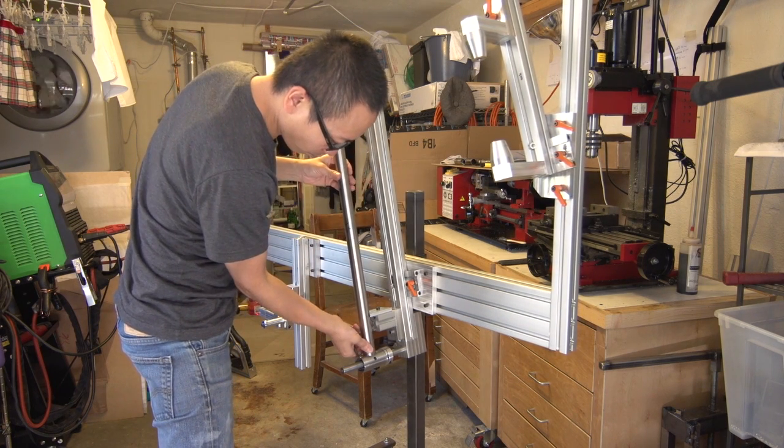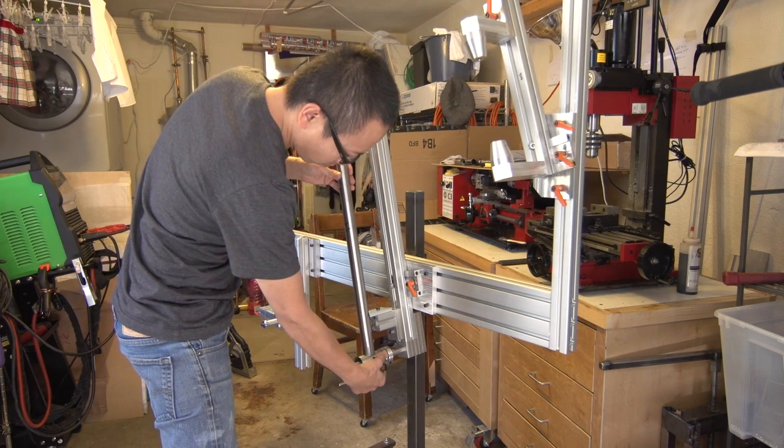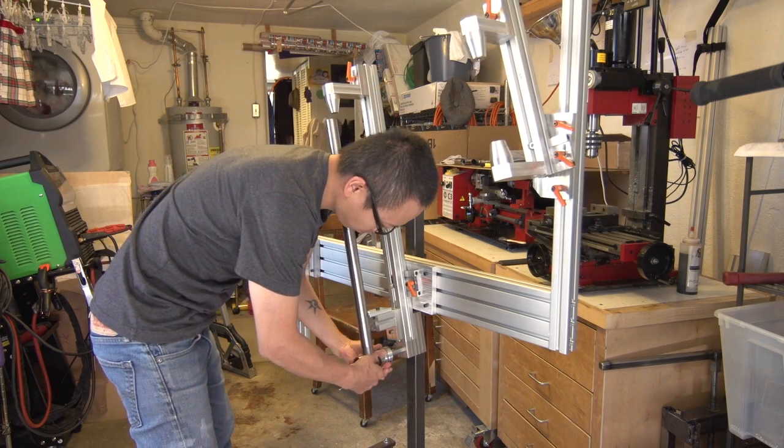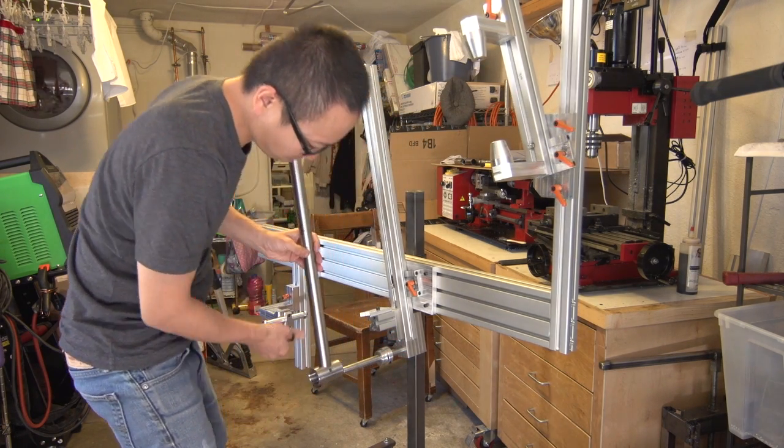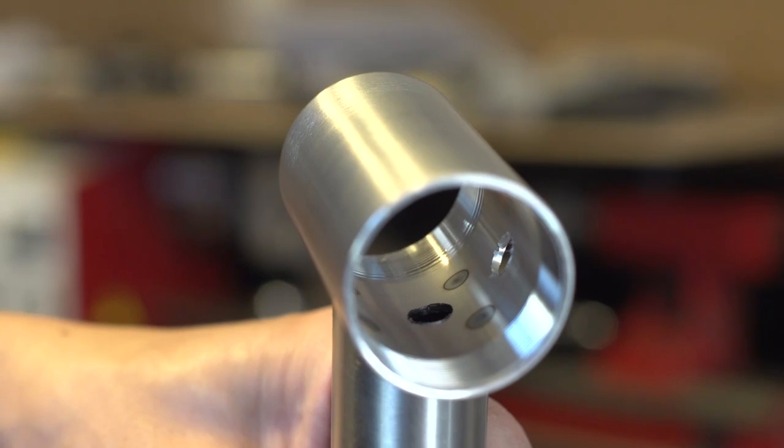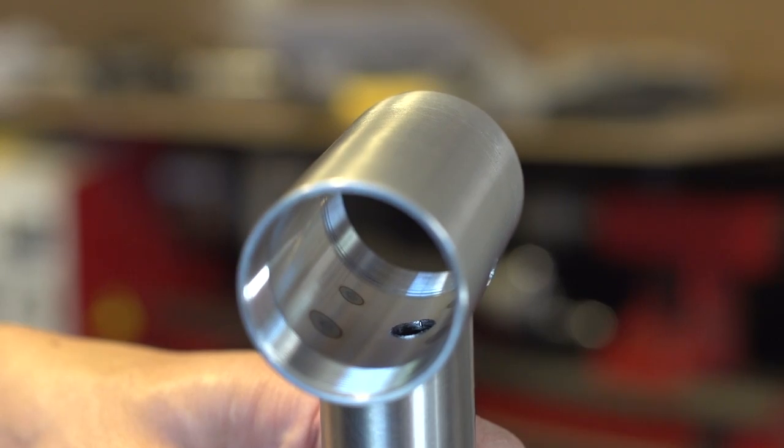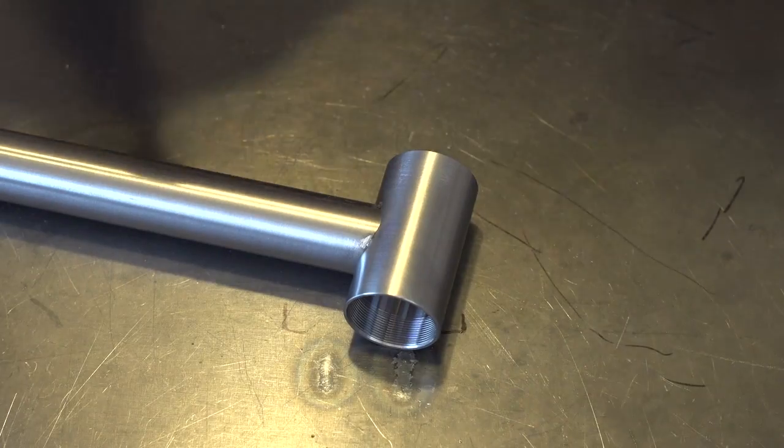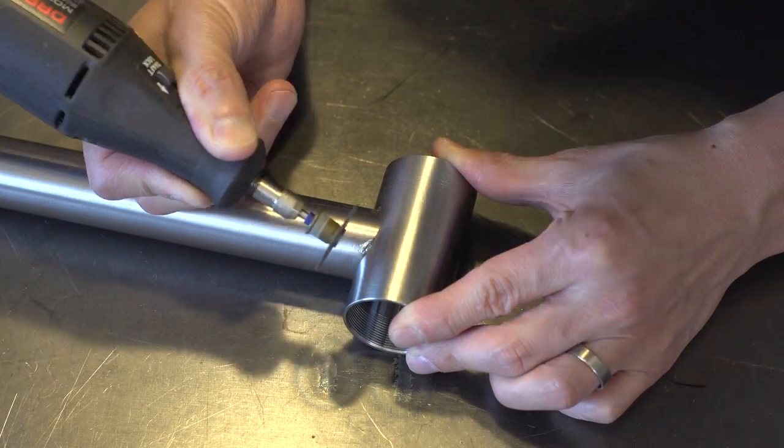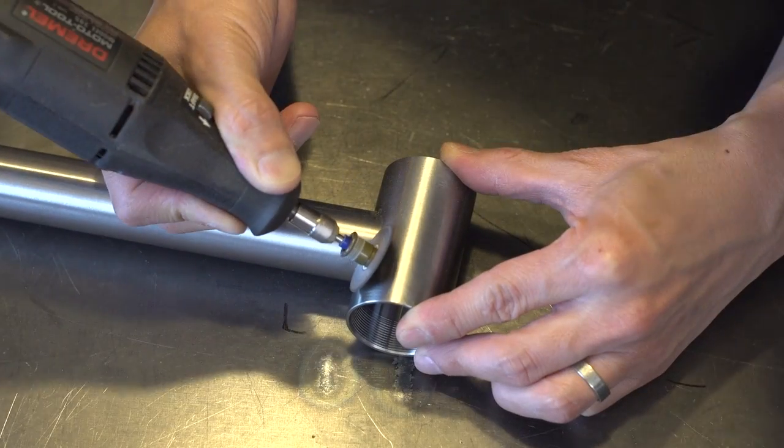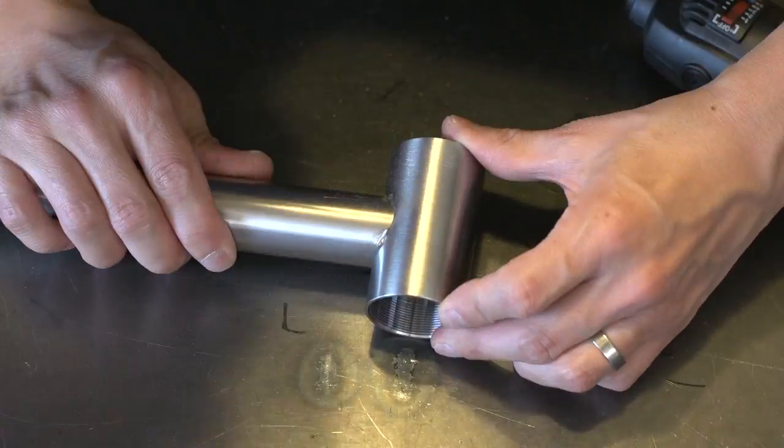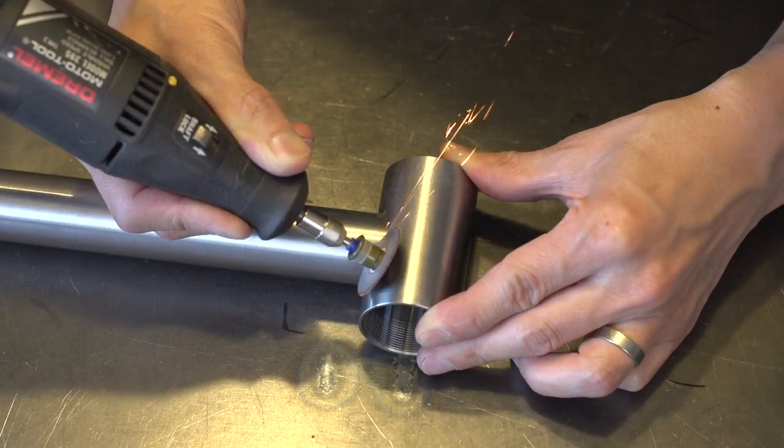First thing we need to do is get the tube that's currently tack welded to the bottom bracket off of the bottom bracket. And I thought this was interesting, the tack slightly oxidized inside the bottom bracket shell. And here I am using the Dremel to get the seat tube off. And it turns out these tacks were not as wimpy as I originally thought they were.